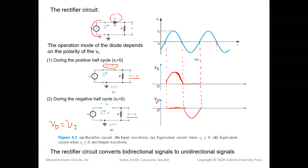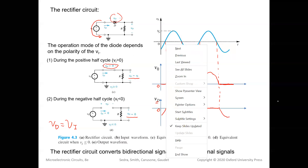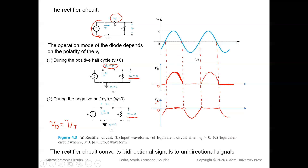In the next positive portion of the cycle the diode is forward biased again, so VO equals VI and VD equals zero. This is what a rectifier circuit does: it converts a bi-directional signal VI — which can be either positive or negative — into a uni-directional signal VO.